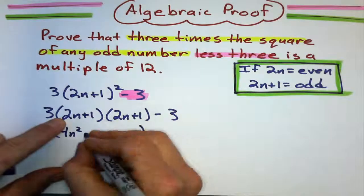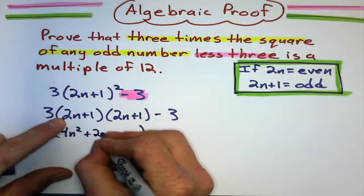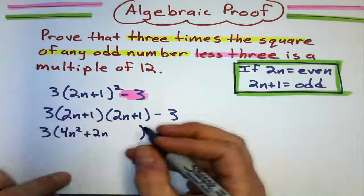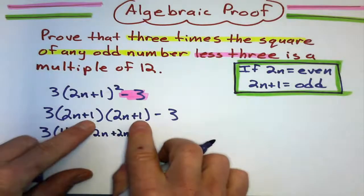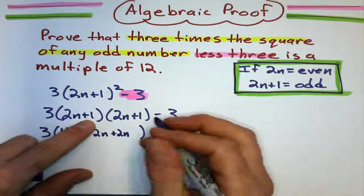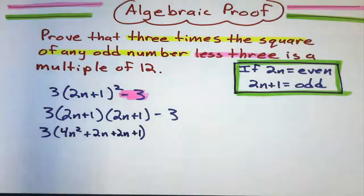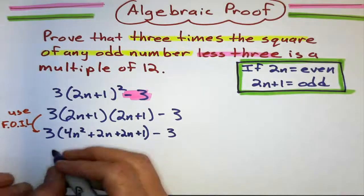Now, I do the outside. 2n times 1 is 2n. Inside, 1 times 2n is 2n. Running out of room. Finally, last, 1 times 1 is 1.